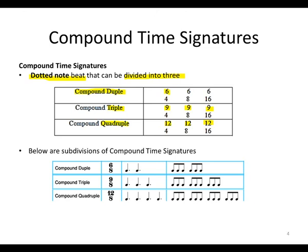Below are the subdivisions of compound time signatures. We have compound duple time, where our example is six-eight. That means six beats — quaver beats. Now, three quaver beats make up a dotted crotchet beat. The second beat will also have three quavers, which is the first group and the second group.